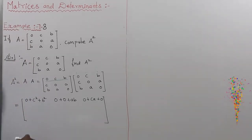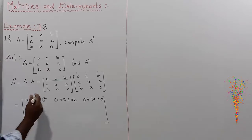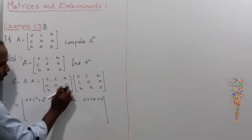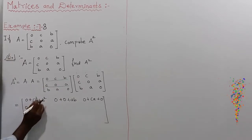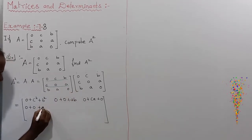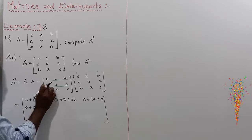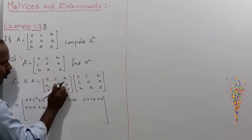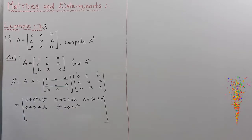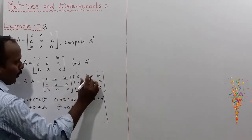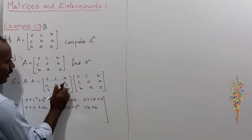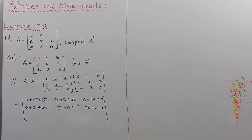Now the second row. Second row values are [c, 0, a]. For (2,1): c×0 = 0, plus 0×c = 0, plus a×b = ab. For (2,2): c×c = c², plus 0×0 = 0, plus a×a = a², giving c²+a². For (2,3): c×b = cb, plus 0×a = 0, plus a×0 = 0. Second row is [ab, c²+a², cb]. Second row completed.